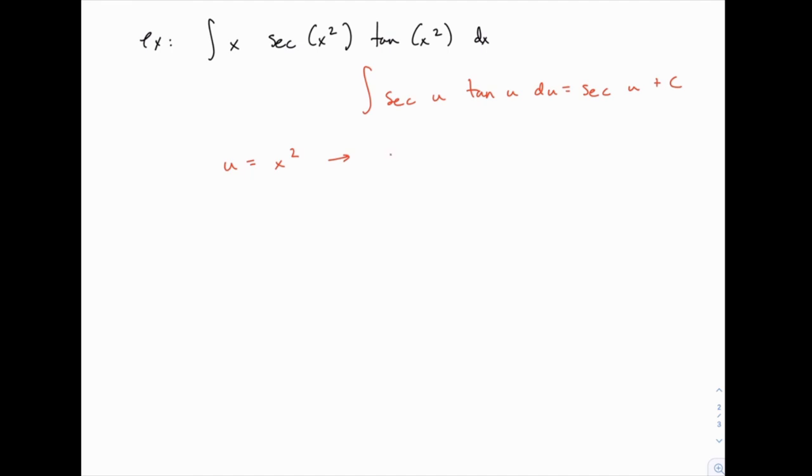Because the derivative of the secant function is secant tangent. So again that tells us what our substitution needs to be. Our u needs to be x squared. The next step as always is to find du, and that's going to be the derivative of u, in our case that makes it 2x times dx.